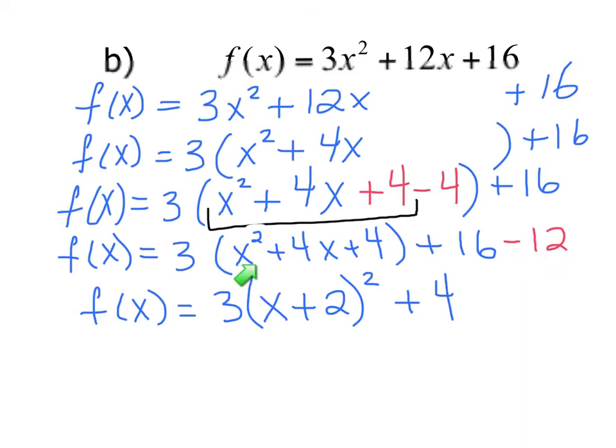So we take our perfect square trinomial that we end up with right here. We write it as x plus 2 all squared. And we end up with our function in vertex form, which is f of x equals 3 bracket x plus 2 all squared plus 4.